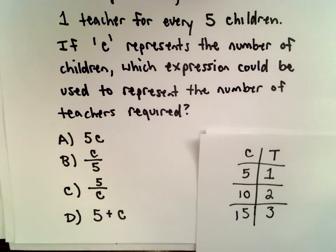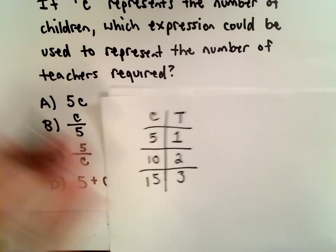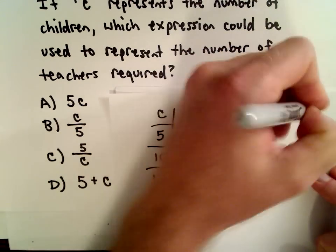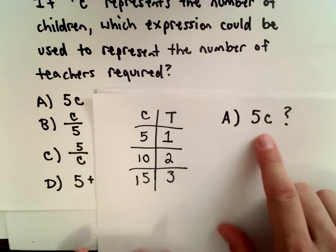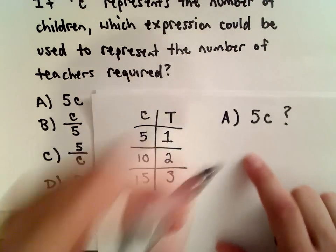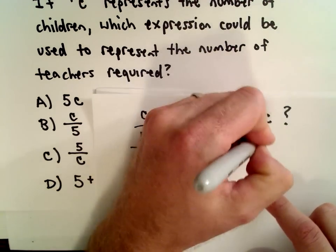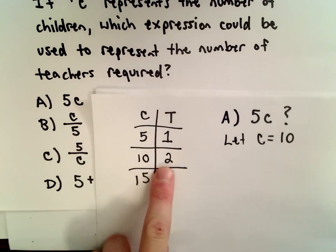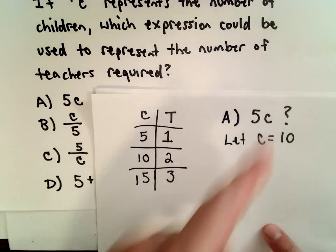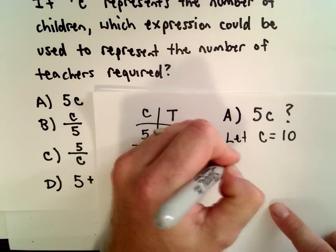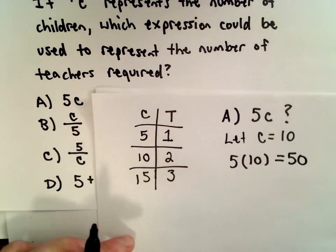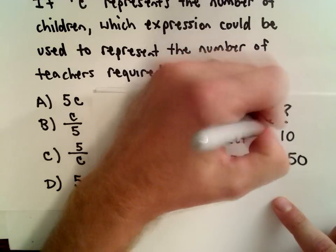Let's see which expression makes sense. Part A says five times the number of children. Is that correct? Let C equal ten. We should get two as our value because ten children need two teachers. But this expression gives five times C, which is ten, so five times ten equals fifty teachers. That's certainly not correct.